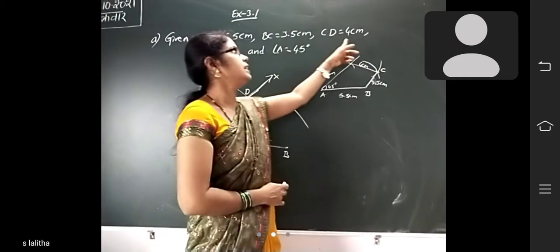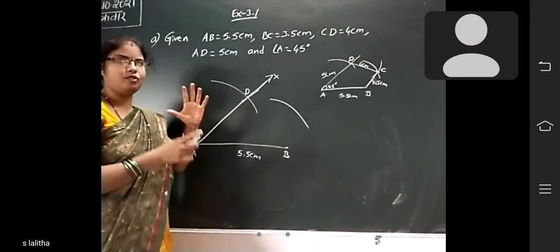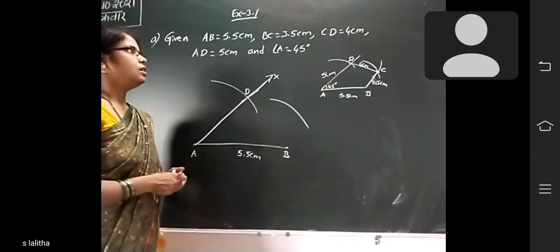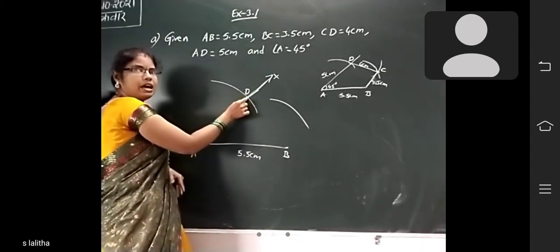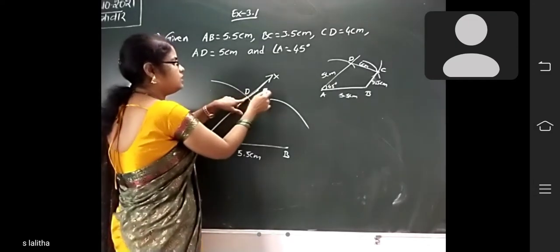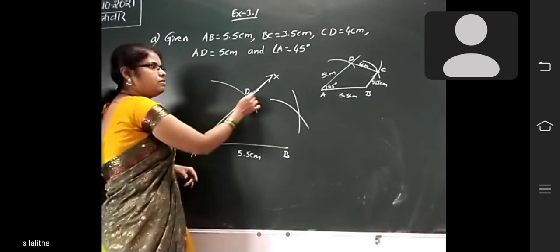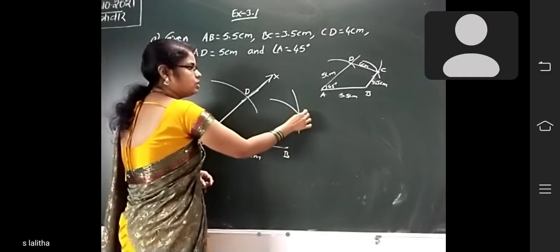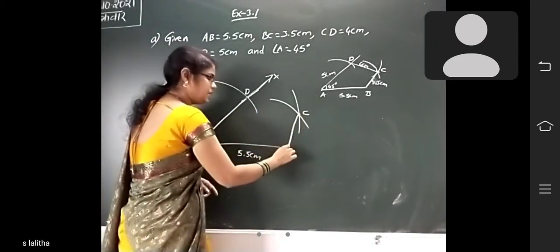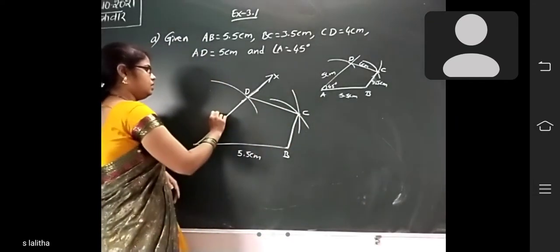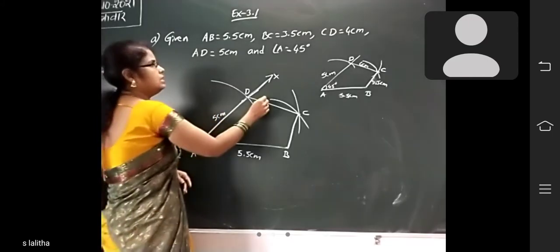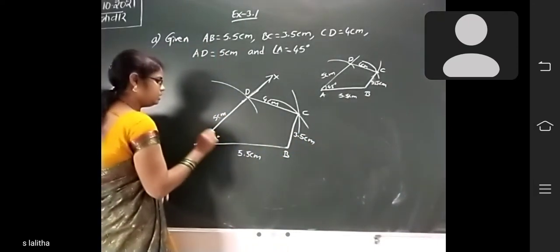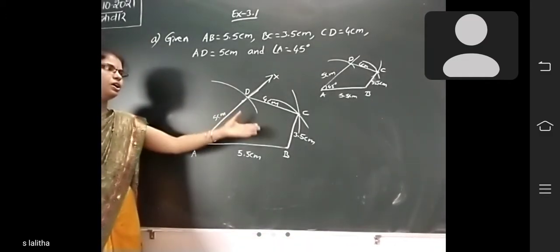Next, CD = 4 cm. Take your compass and measure 4 cm on the scale. Keep the compass on D and draw an arc from D, 4 cm. Now these two arcs — the arc from B (3.5 cm) and the arc from D (4 cm) — will intersect. Join B, C, C, D. So here: AD = 5 cm, CD = 4 cm, BC = 3.5 cm, and angle A = 45 degrees. The quadrilateral is formed.